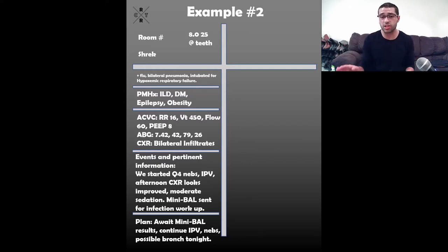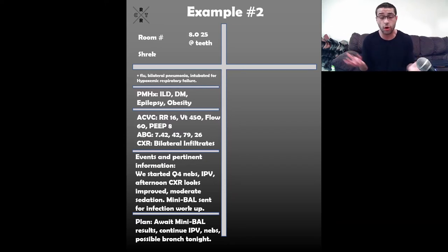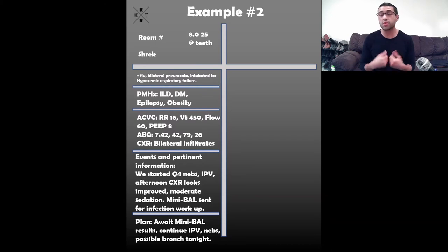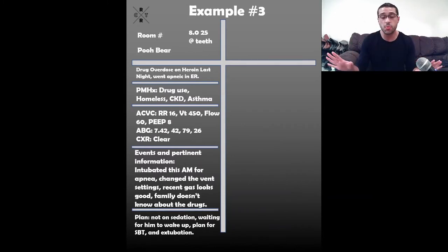You have the vent settings, the ABG, and what the chest x-ray looks like. Pertinent events: we started Q4 NIMs, started IPV today to try and clear up the pneumonia, gave him more sedation because he was getting rowdy and trying to get out of bed, and did a mini-BAL to see if he has a superimposed bacterial pneumonia. You also want to talk about secretions — what they were in the morning versus what they are now. The plan: waiting for mini-BAL results, continuing IPV and NIMs, and he may get a bronchoscopy tonight.